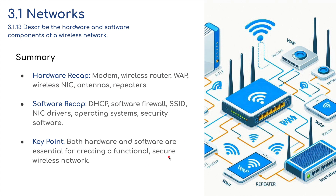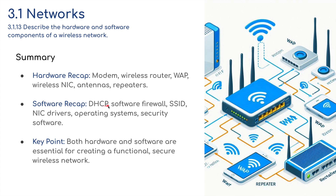In summary for this video — hardware recap: modems, wireless routers, WAPs, wireless NICs (network interface cards), antennas, and repeaters. Software: DHCP, software firewall, SSID, NIC drivers, operating systems, and security software. Remember, both hardware and software are essential for creating a functional, secure wireless network.